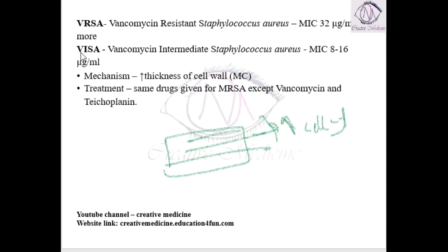Treatment of Vancomycin Resistant and Vancomycin Intermediate Staphylococcus Aureus is almost similar to Methicillin Resistant Staphylococcus Aureus. But here the problem is that Vancomycin is not functioning properly — that is, resistance to Vancomycin is present.